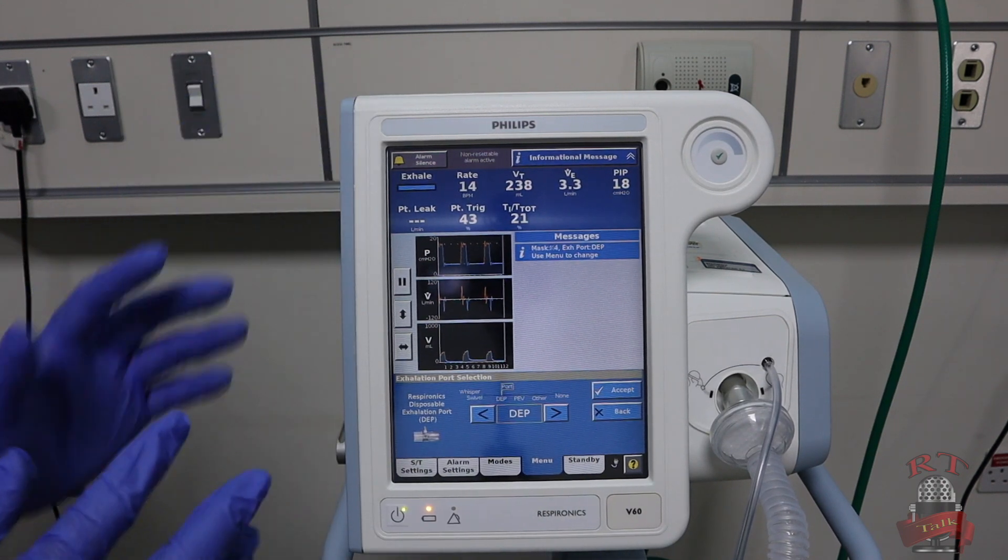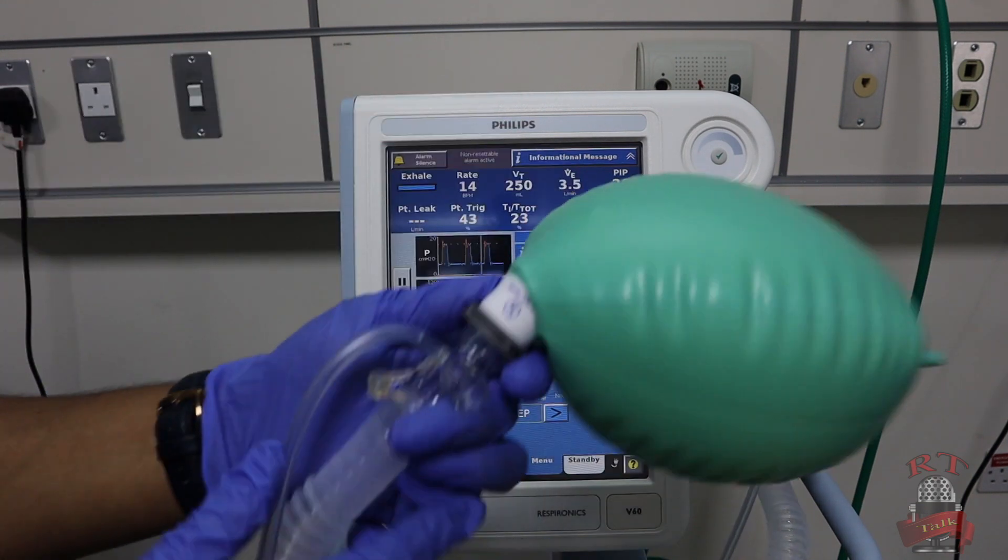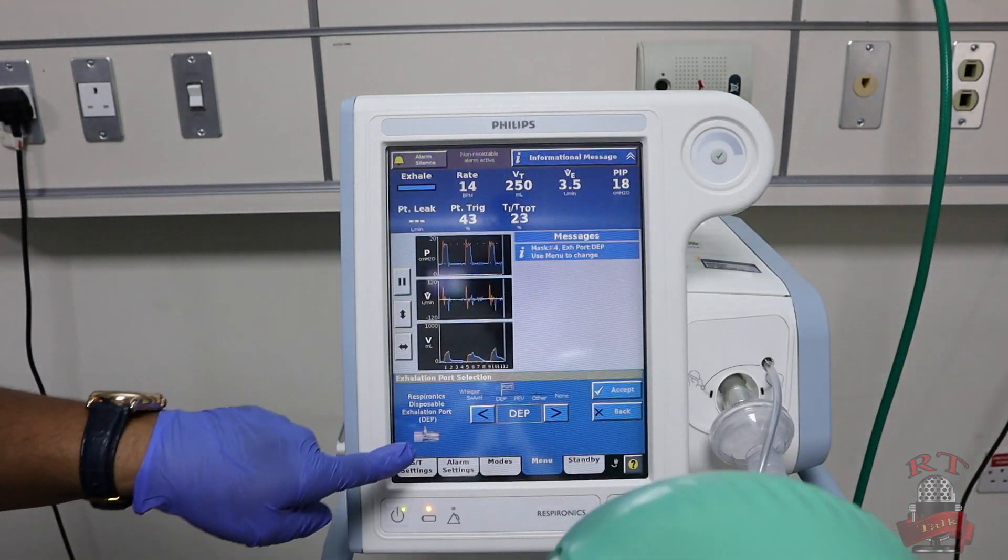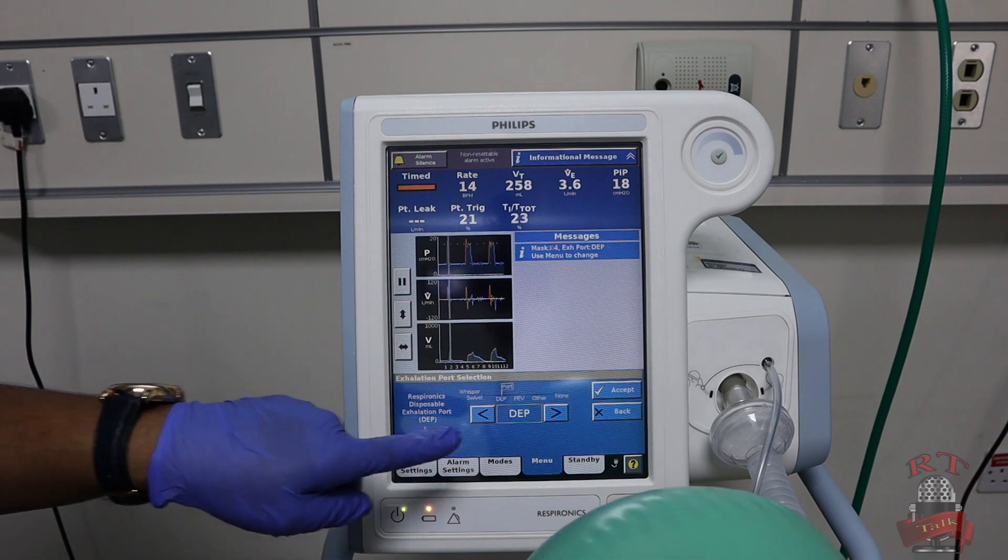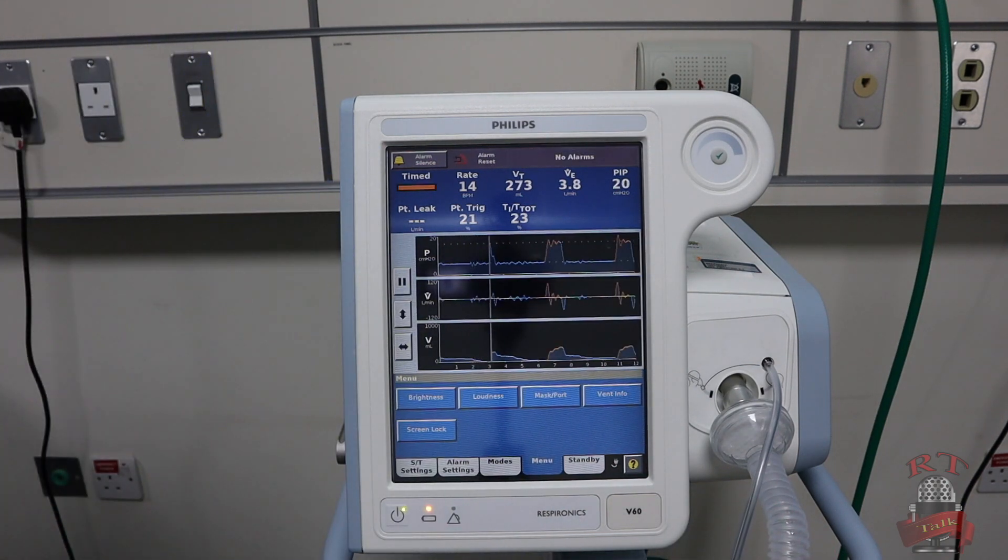Accept. Then you will select the type of exhalation you are using. The one we are using right now here is DIP, this one. It will be in the same picture also in the corner. So I will accept. Now I'm ready to set up my settings.